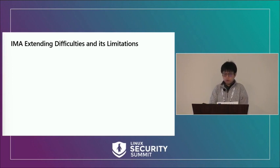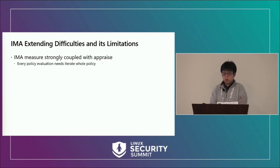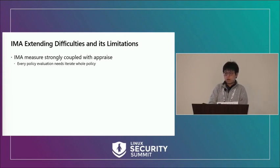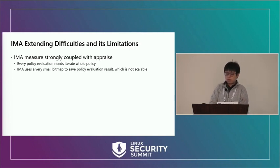From here we discuss IMA's fundamental limitations. The first is that IMA measure is strongly coupled with appraise. Because IMA has multiple actions, every policy evaluation must iterate the whole policy to cover all possible actions — this can be inefficient if the policy only contains one action like appraise. IPE, by contrast, focuses only on code integrity and makes a decision as soon as it finds the first applicable rule, making it more efficient. This coupling also causes the IMA policy evaluation result to be a 32-bit bitmap containing IMA actions with their parameters. With our extensions, 30 bits are already used, leaving only 2 bits for future features — not scalable.